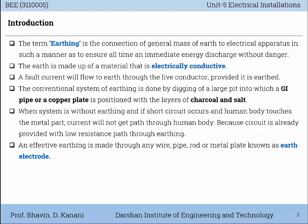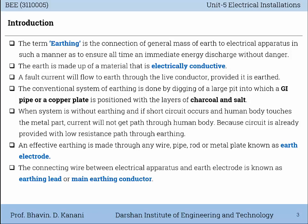An effective Earthing is made through any wire, pipe, rod, or metal plate known as the Earth electrode. The connecting wire between the electrical apparatus and Earth electrode is known as the Earthing Lead or Main Earthing Conductor.